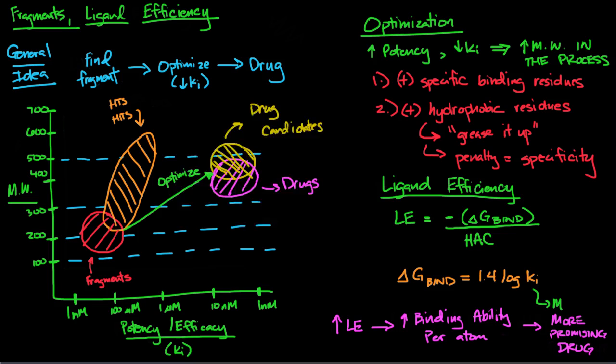Okay, last video for drug discovery - we're going to talk about fragments and ligand efficiency. The general idea behind using fragments for drug discovery is we're going to find a fragment with reasonably good binding towards our protein, enzyme, or whatever target we're trying to act upon. What we can do from that fragment is optimize it, meaning get better binding and specificity for the protein or receptor. When I say optimize, we're going to lower the Ki value, and once you're done optimizing it, you possibly have a drug.